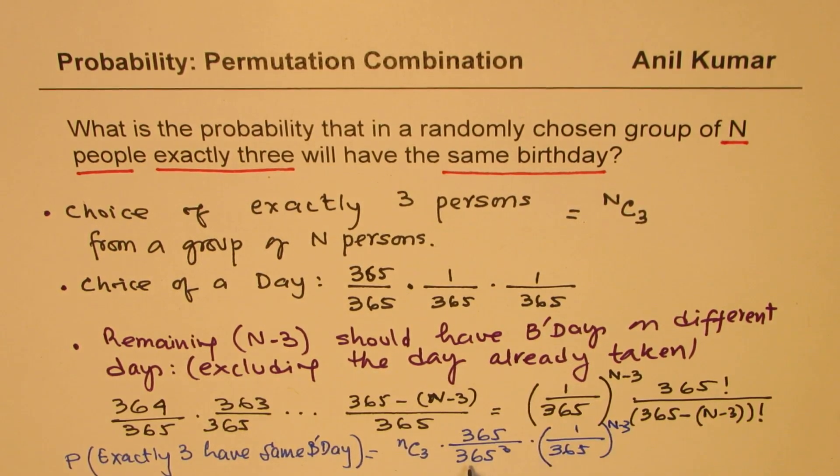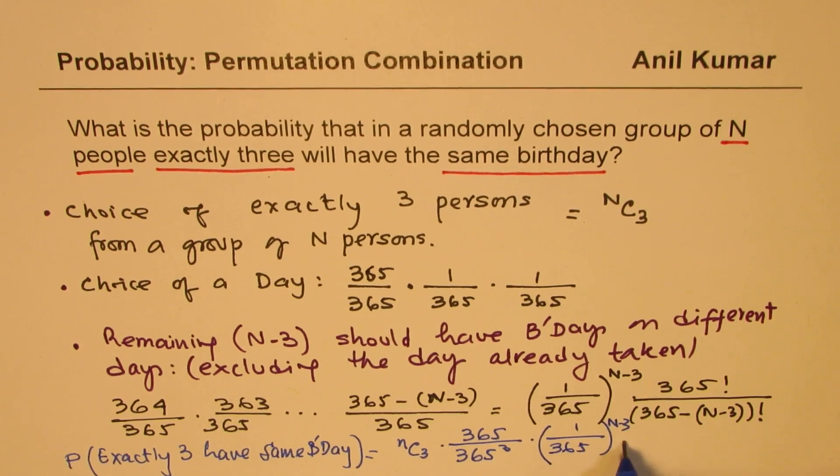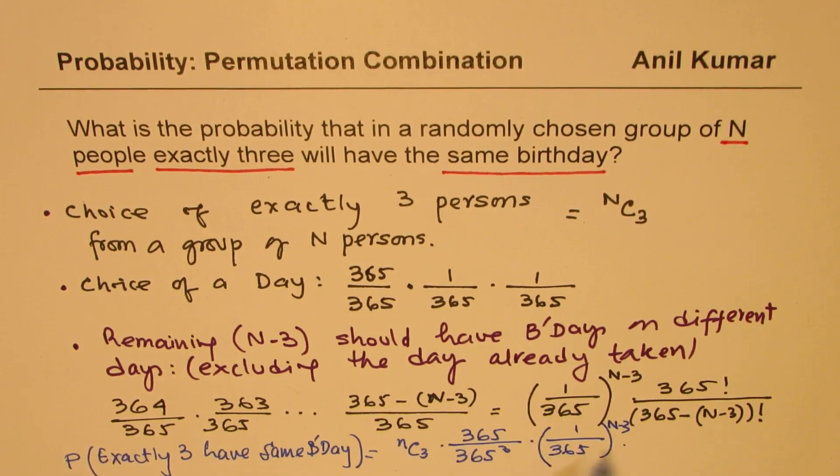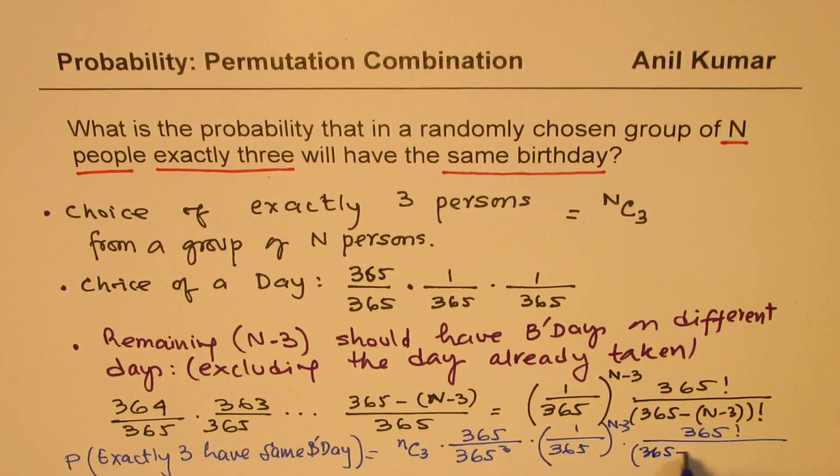Of course, you can combine this and write 365 to the power of n, but keeping them separate helps us to understand how we derive at our result. And then we have 365 factorial divided by 365 minus n minus 3 factorial.